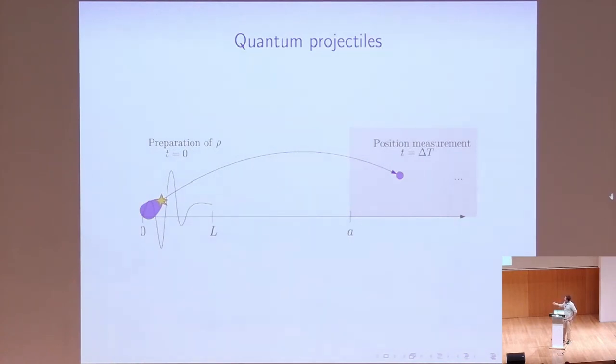and it starts confined in some region between zero and L. And what we want to know is what's the probability after some time has elapsed of detecting the particle in some other region, like usually we take the semi-infinity interval between a and infinity. So classically,